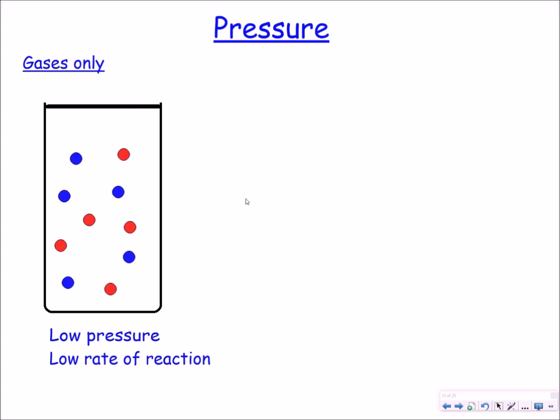So our third factor is pressure. Now pressure can be used to increase the rate of reaction of gases and not for solids or liquids. So here I've got a container and at low pressure the particles are more spaced out, therefore the frequency of collisions is lower and this lowers the rate of reaction.